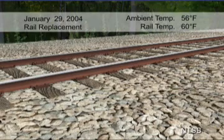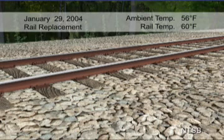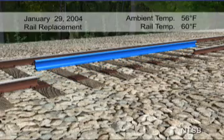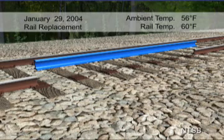On January 29th, a welding crew arrived to replace a segment of the rail. The blue rail represents the rail that was removed. The rail temperature was 60 degrees Fahrenheit at the time of the replacement.